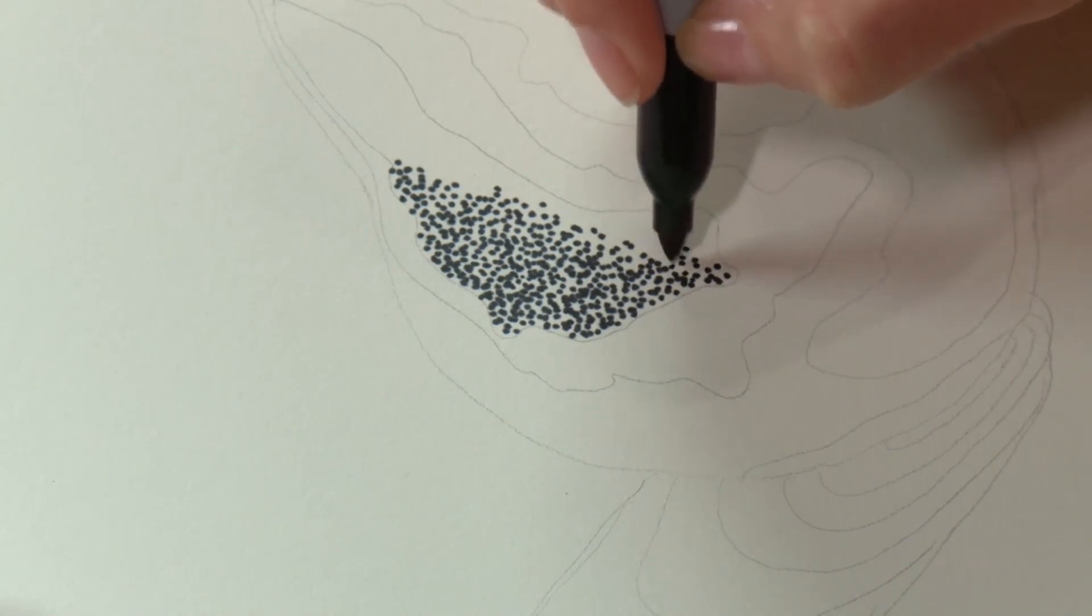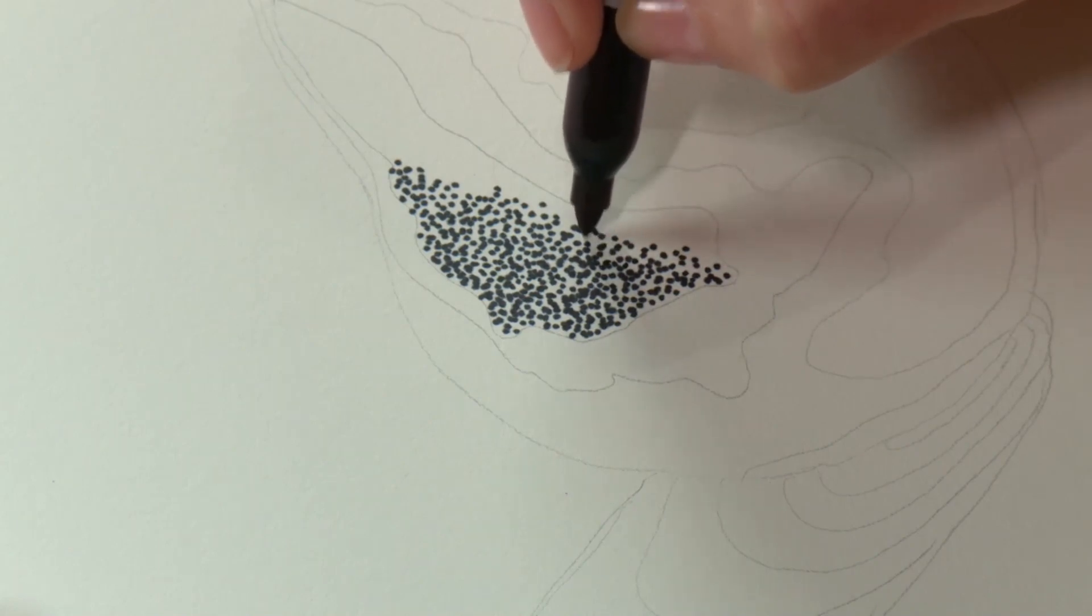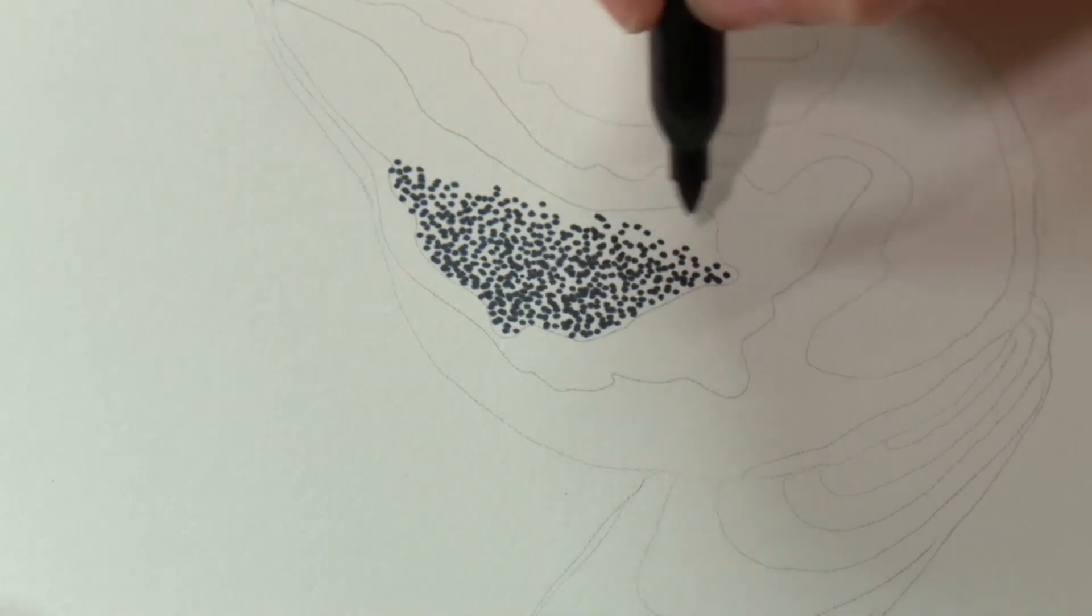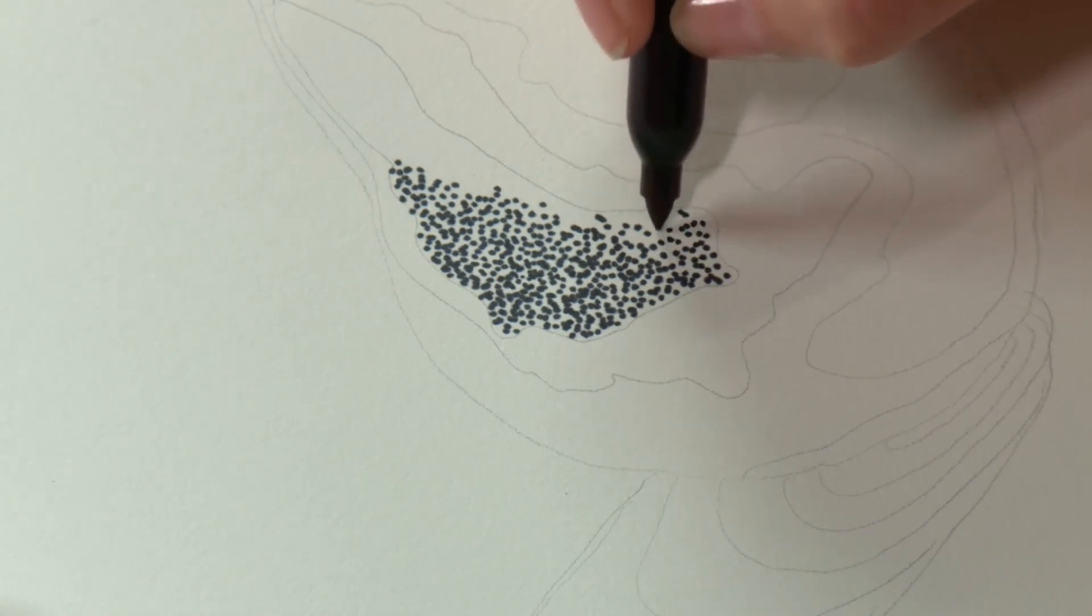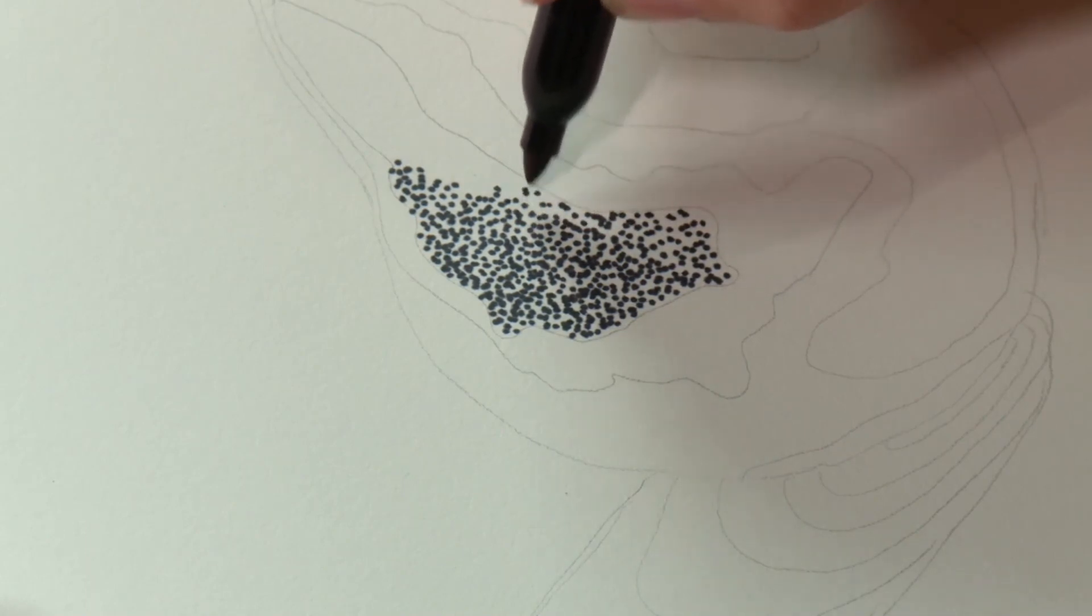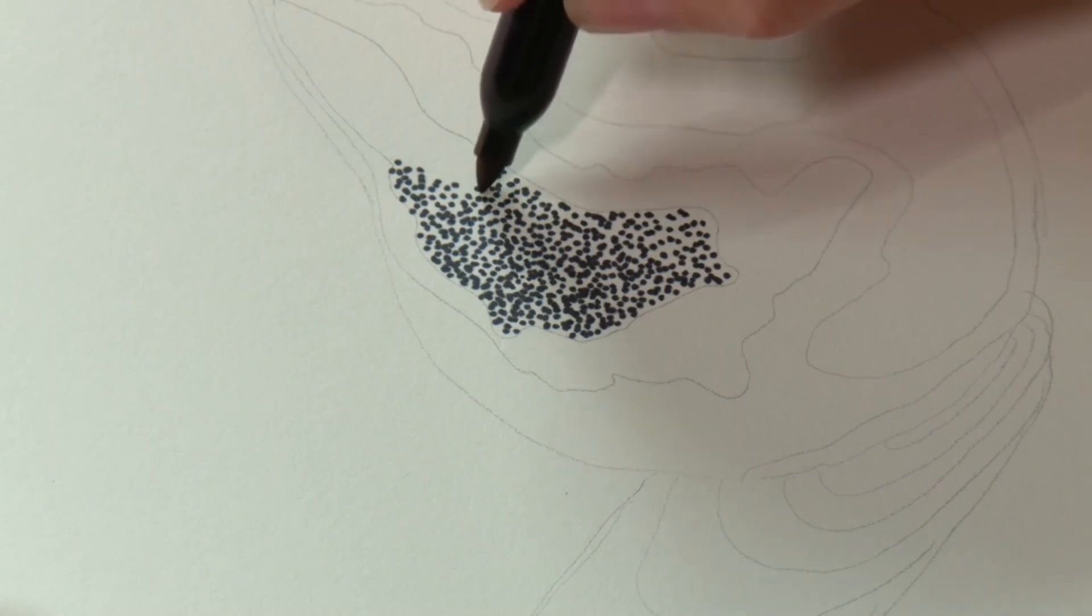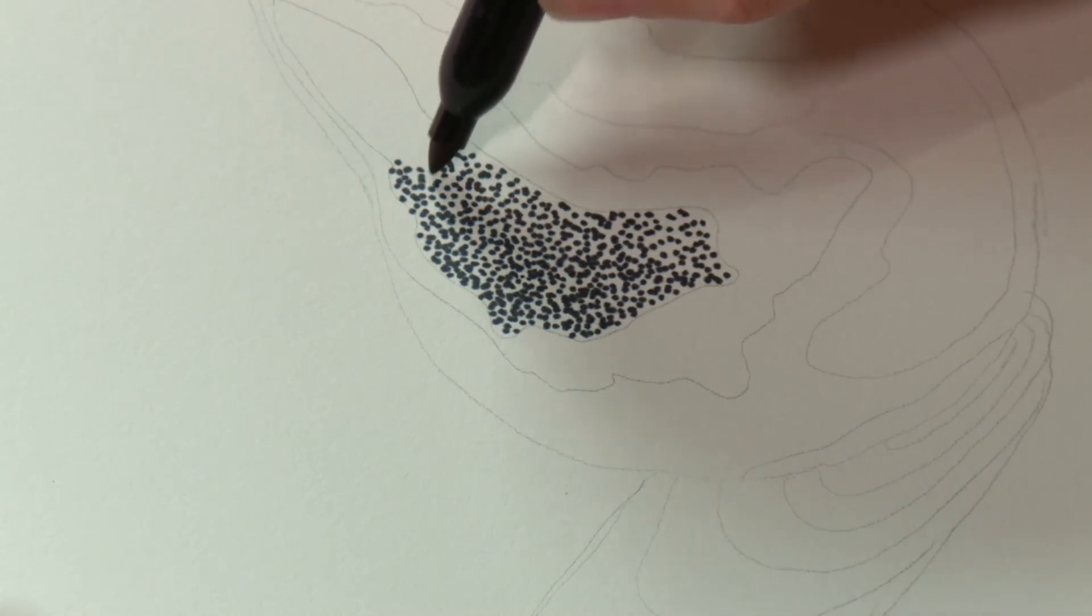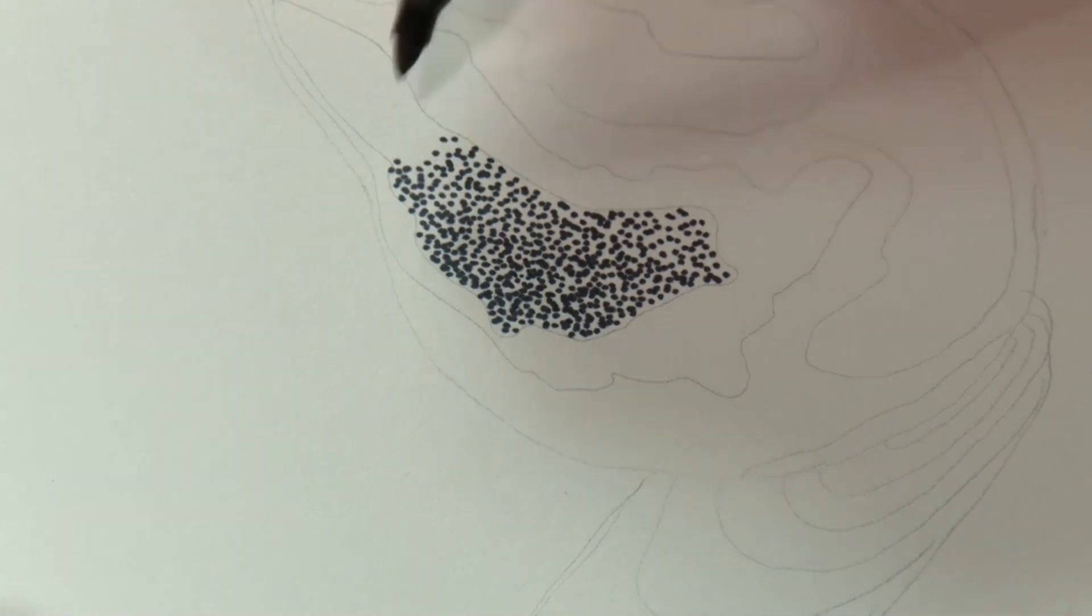You want to take your time, lay those dots down nice and evenly but there's not really any right or wrong way to go about doing this. Some people like to fill in the whole area with a nice fine far apart layer of dots and then go in and add the dark spots later. Other people like to work the way I'm working by just making a mass of dots and working outward. There's not a right or wrong way to do it. Personal preference.